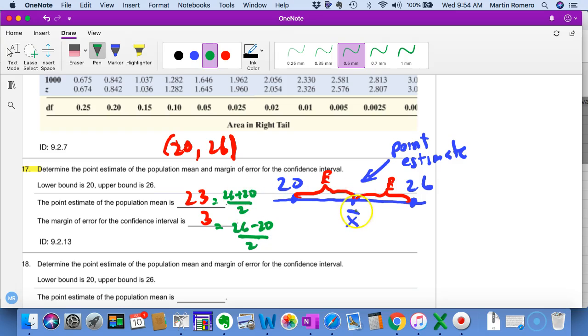So here you're finding the average or the middle value—add two numbers, divide by 2. Here you're finding the distance, the difference between them, and cut it in half. So 26 to 20 is 6, divided by 2 is 3. That's the other way to do those.